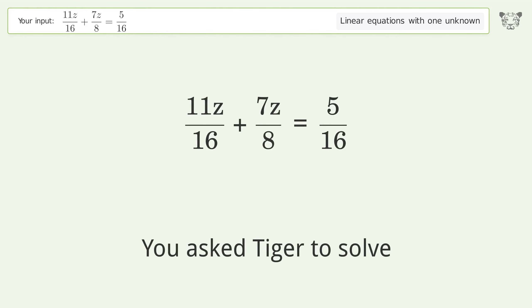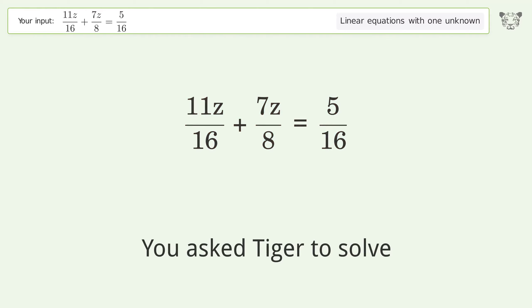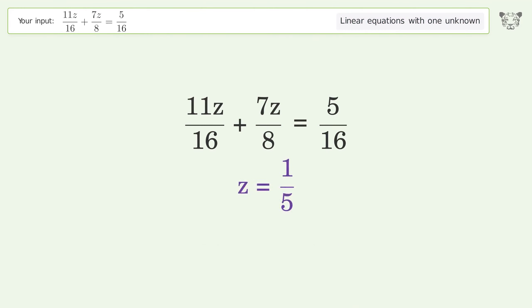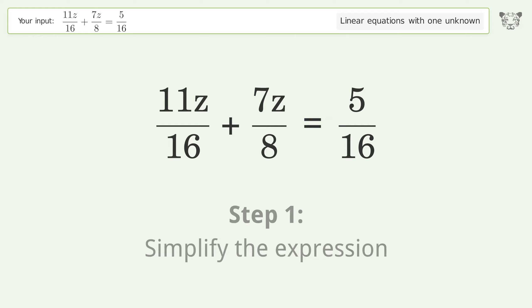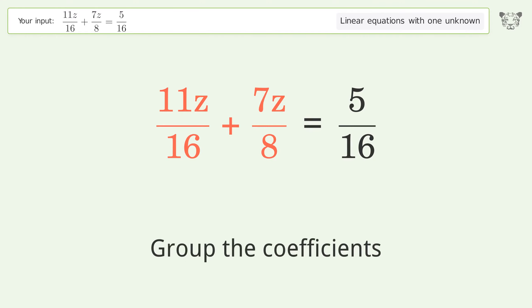You asked Tiger to solve this — it deals with linear equations with one unknown. The final result is z equals one over five. Let's solve it step by step: simplify the expression and group the coefficients.